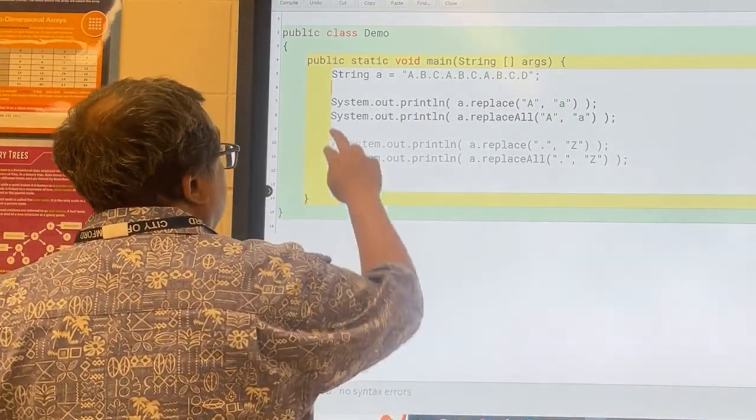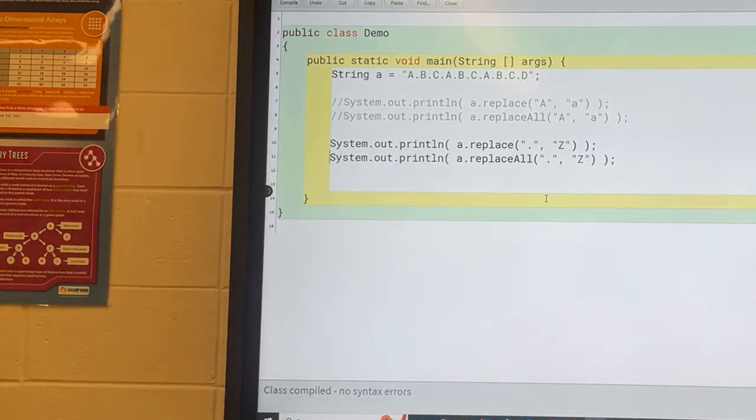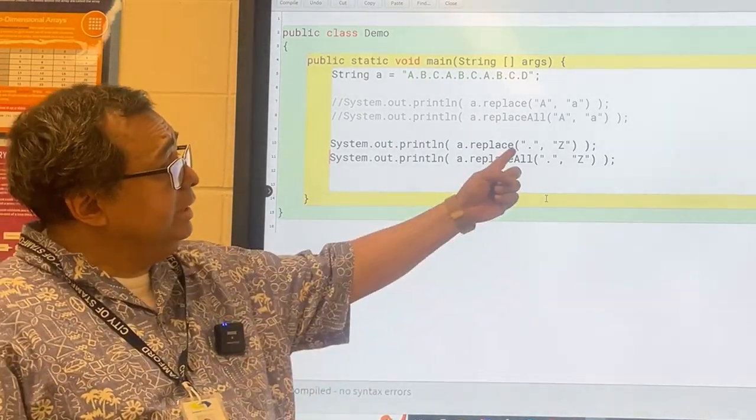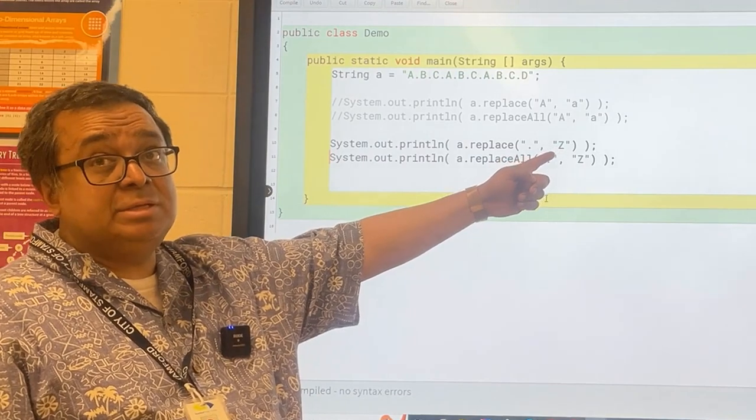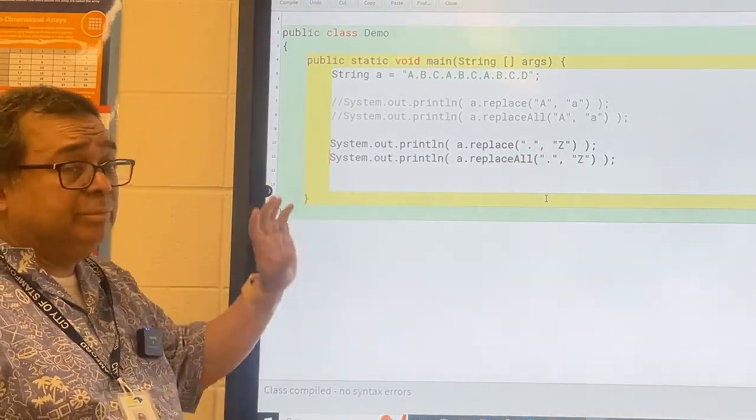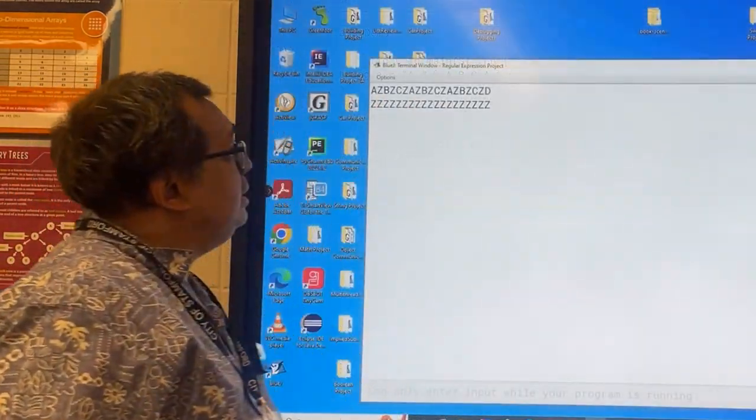So I'm going to comment these out, and I'm going to uncomment these two. Now I am presumably doing a similar thing. I'm taking the periods and turning them into capital Zs. And you'll notice that this time the outputs will be extremely different from one another. So let's run this one. Look at that.